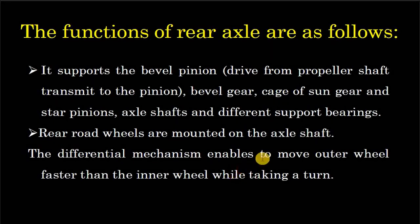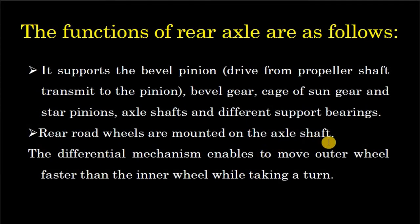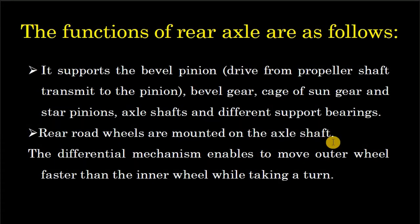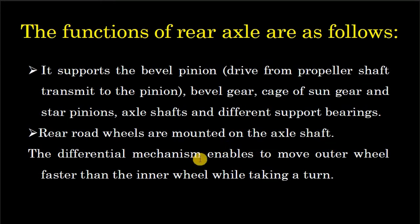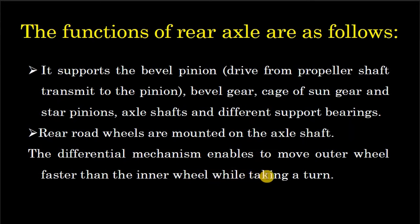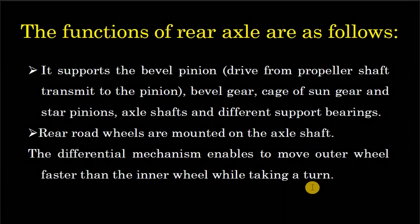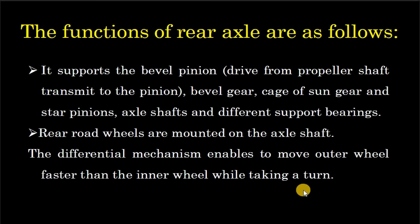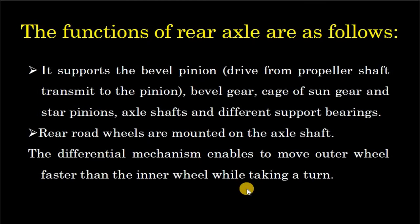Rear road wheels are mounted on the axle shaft. जो सड़क पर चलने वाले पिछले पहिए axle shaft पर लगे होते हैं। The differential mechanism enables the outer wheel to move faster than the inner wheel while taking a turn. जब गाड़ी किसी मोड़ पर मुड़ रही है, तब differential का काम है बाहर वाले पहिए को तेज़ घुमाना और अंदर वाले पहिए को कम घुमाना।